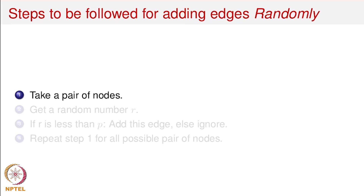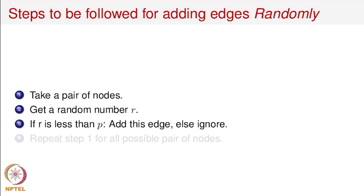We process all N-choose-2 pairs of nodes. For each pair, we get a random number r between 0 and 1. If r is less than or equal to p, we add an edge between this pair of nodes; if r is greater than p, we do not add an edge. We keep repeating these steps for all possible pairs of nodes.